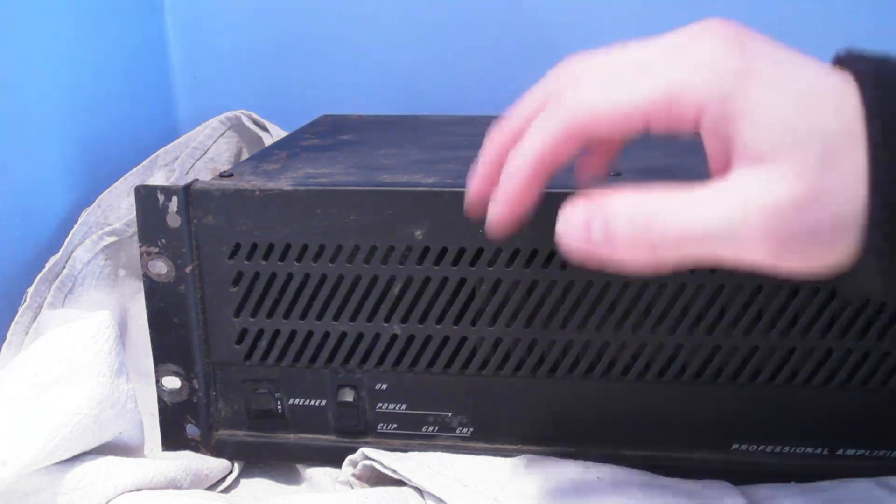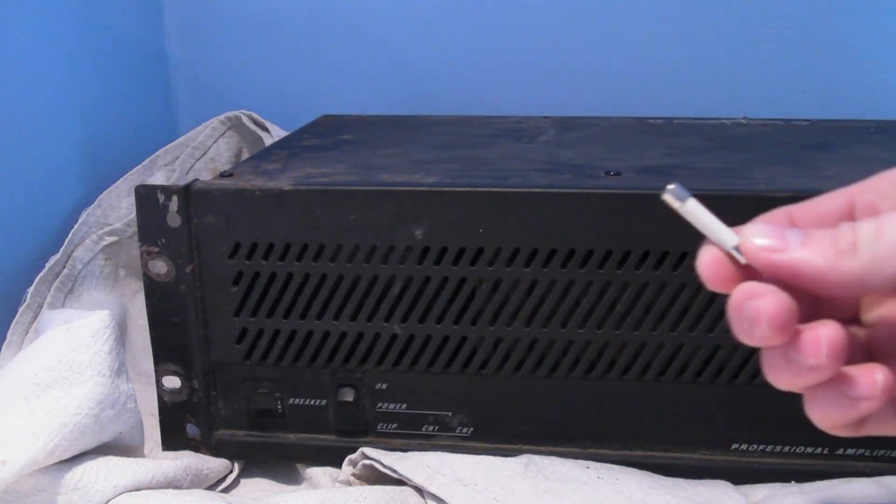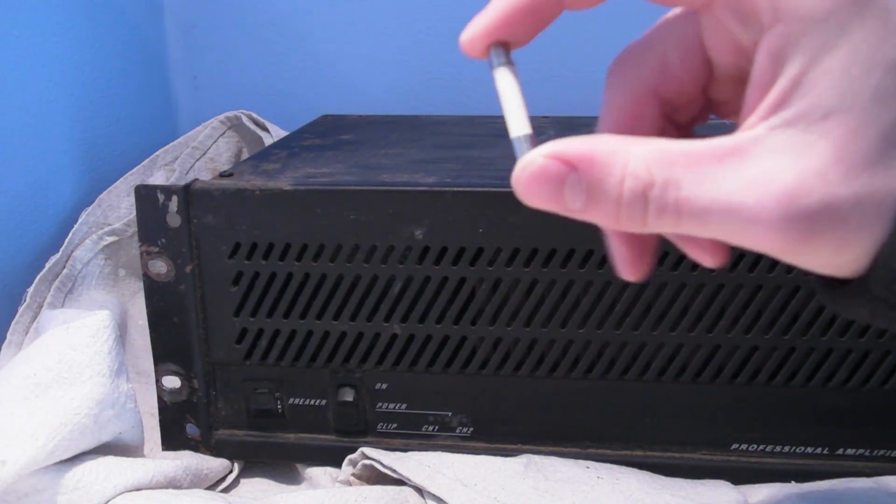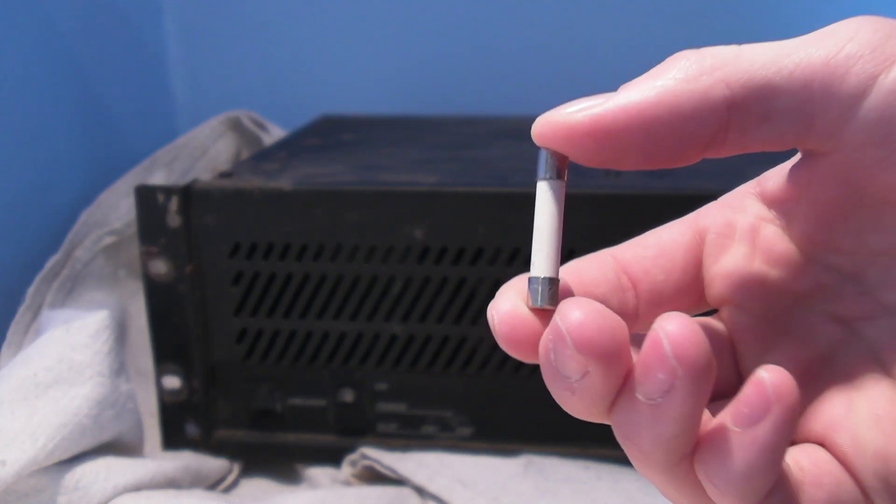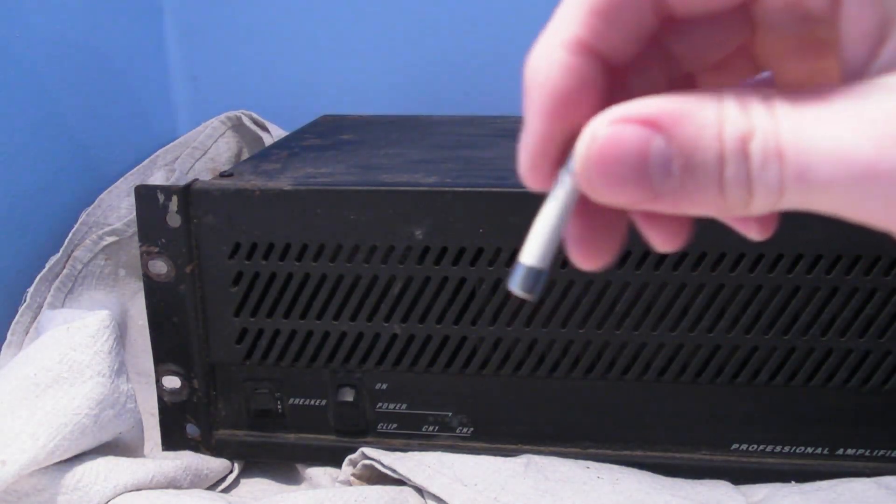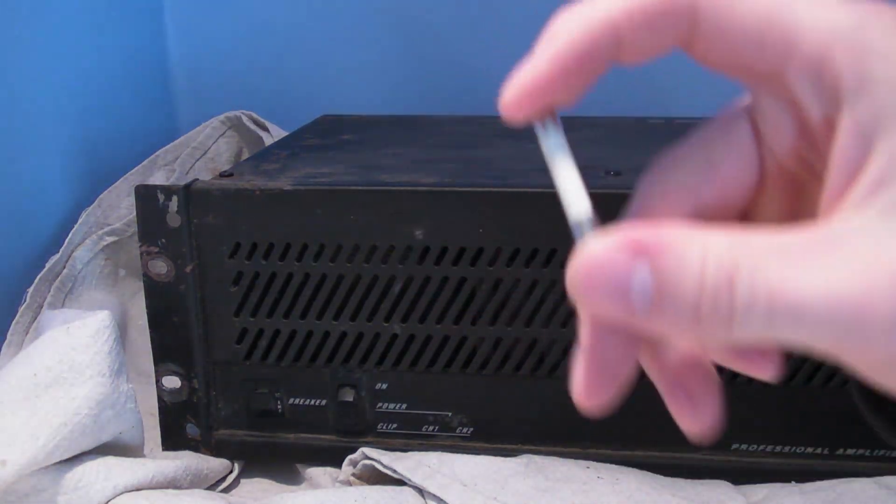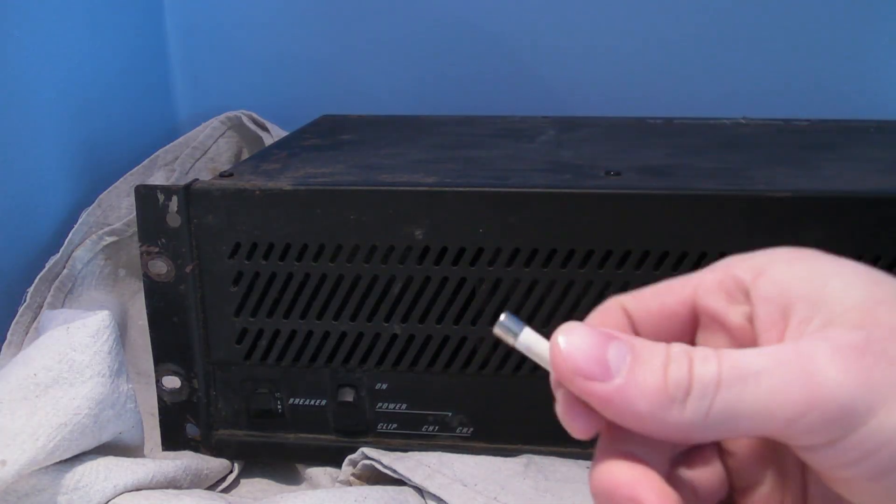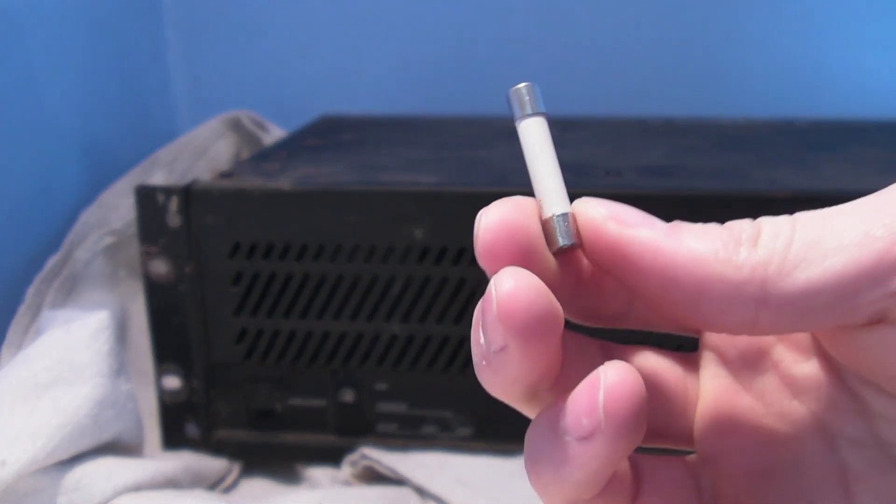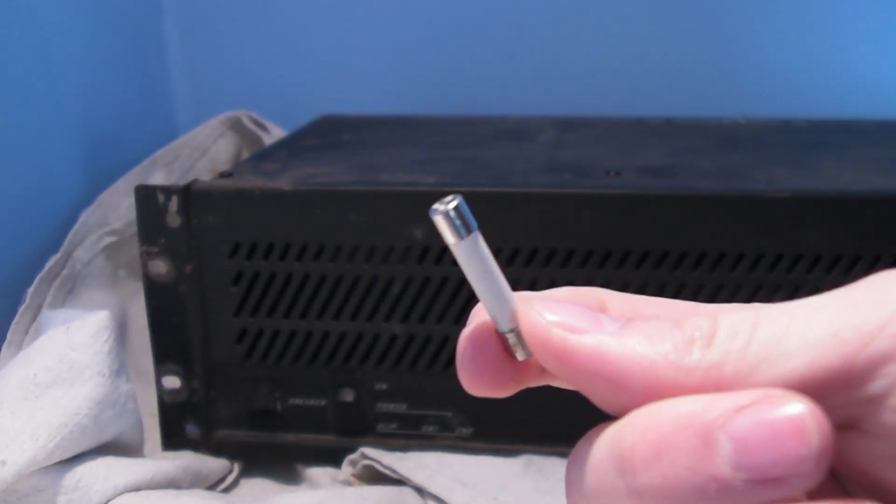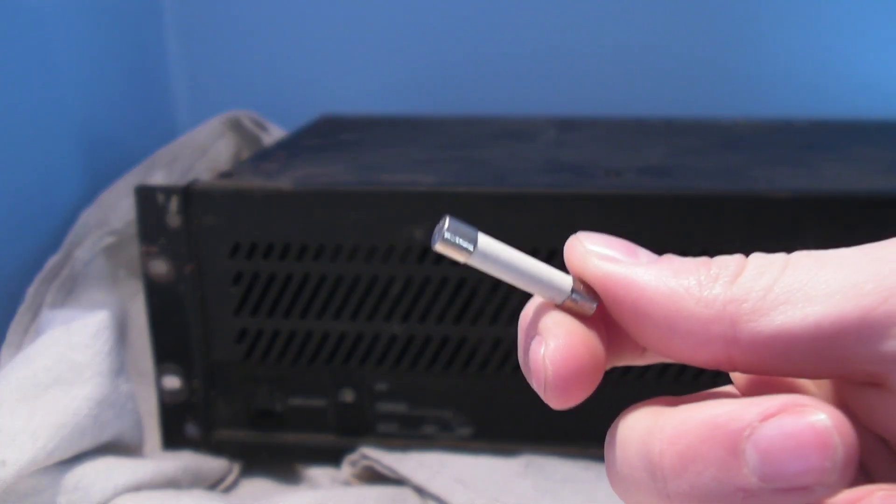The other option is that the internal fuse, which looks like this, has actually blown. There's usually one for each channel. If this thing is blown, then that means that there is a problem with some circuitry inside the amp. Something is short-circuited. So if this fuse is blown, you know that you have a real issue.